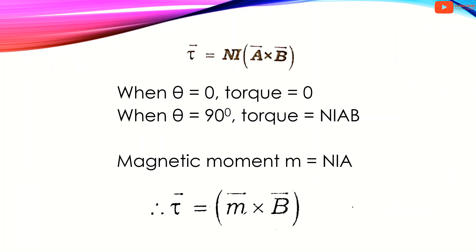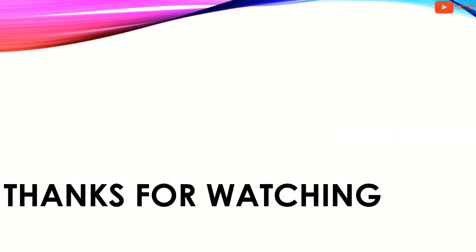The torque is equal to N I A B sin theta. When theta equals 0 degrees, the torque is zero. When theta equals 90 degrees, the torque is maximum and equals N I A B. The magnetic moment m equals N I A, so torque equals m cross B, that is vector m cross vector B. Thanks for watching.